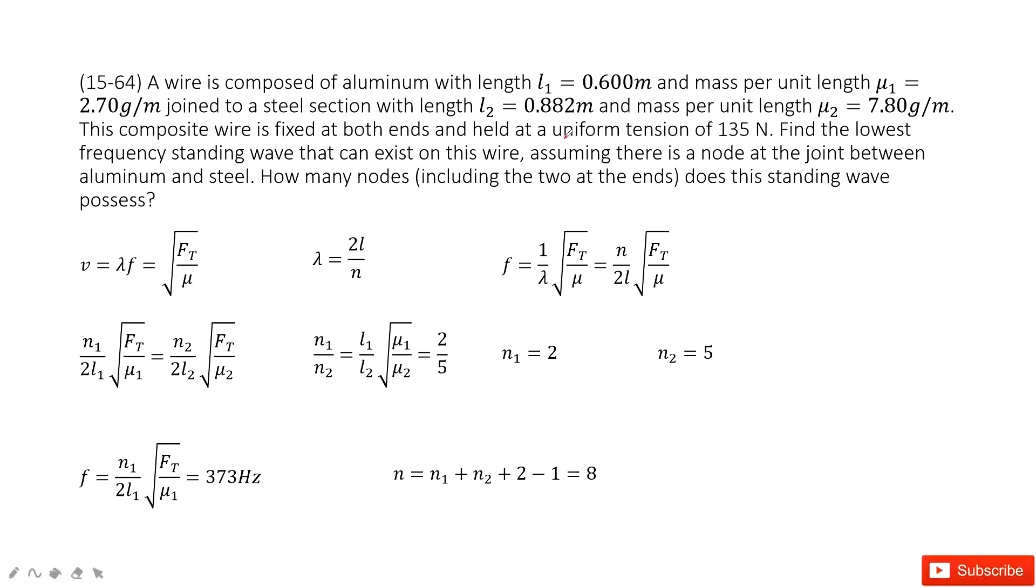And then the tension is given for these wires. We need to find the lowest frequency of standing waves can exist on these wires. So for this one, we need to find the frequency. So now we need to see what the quantity is given. L, mu, and the tension.